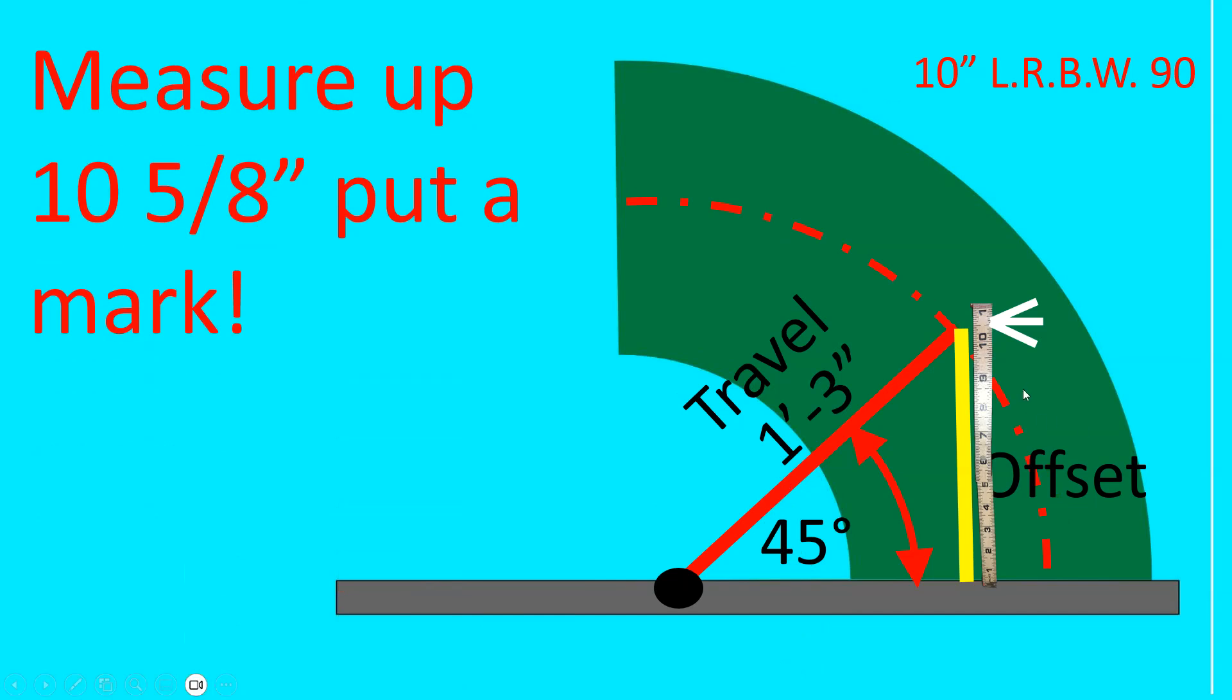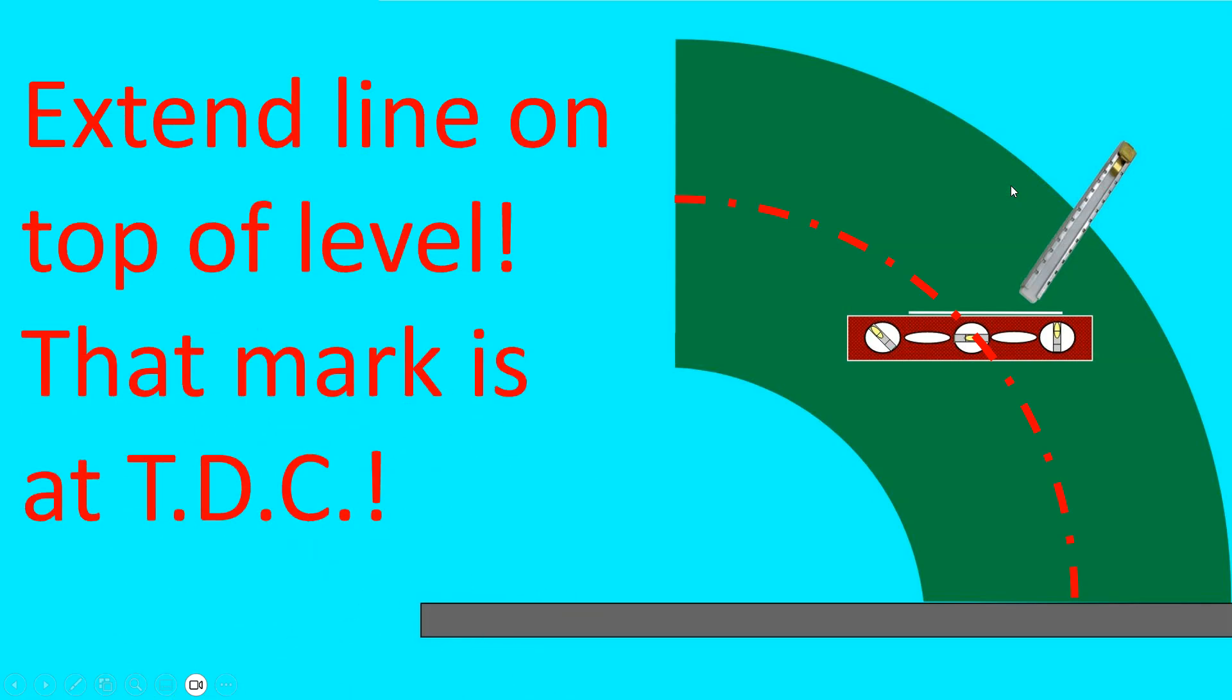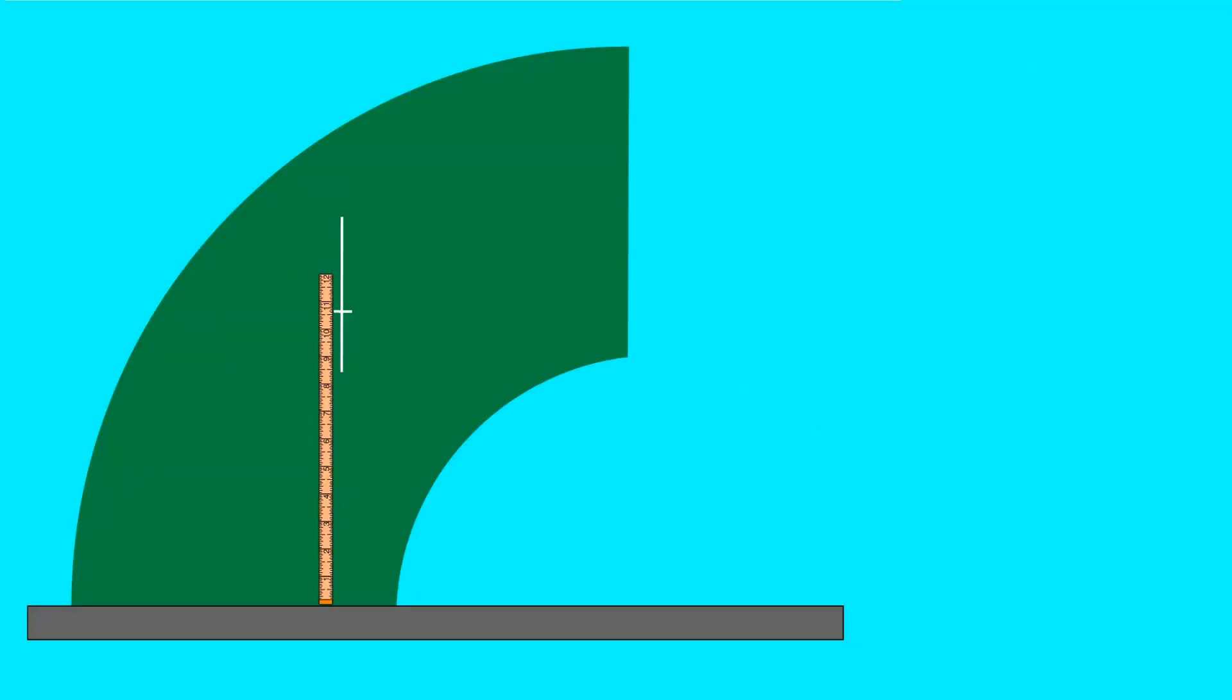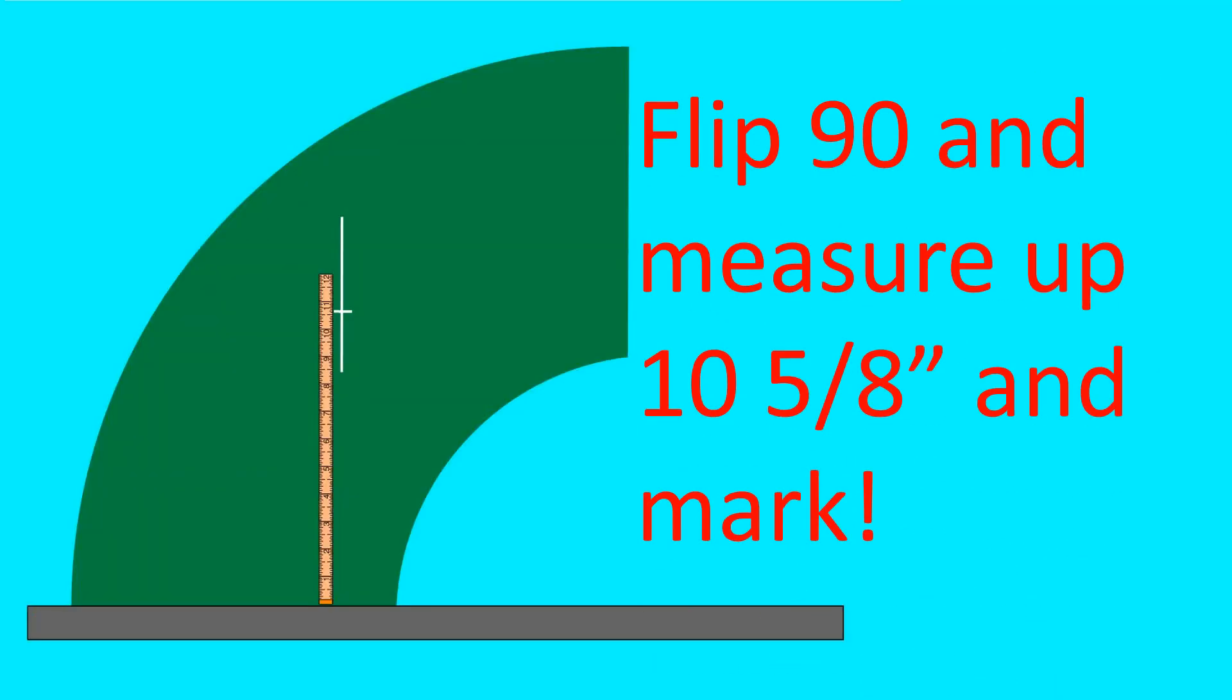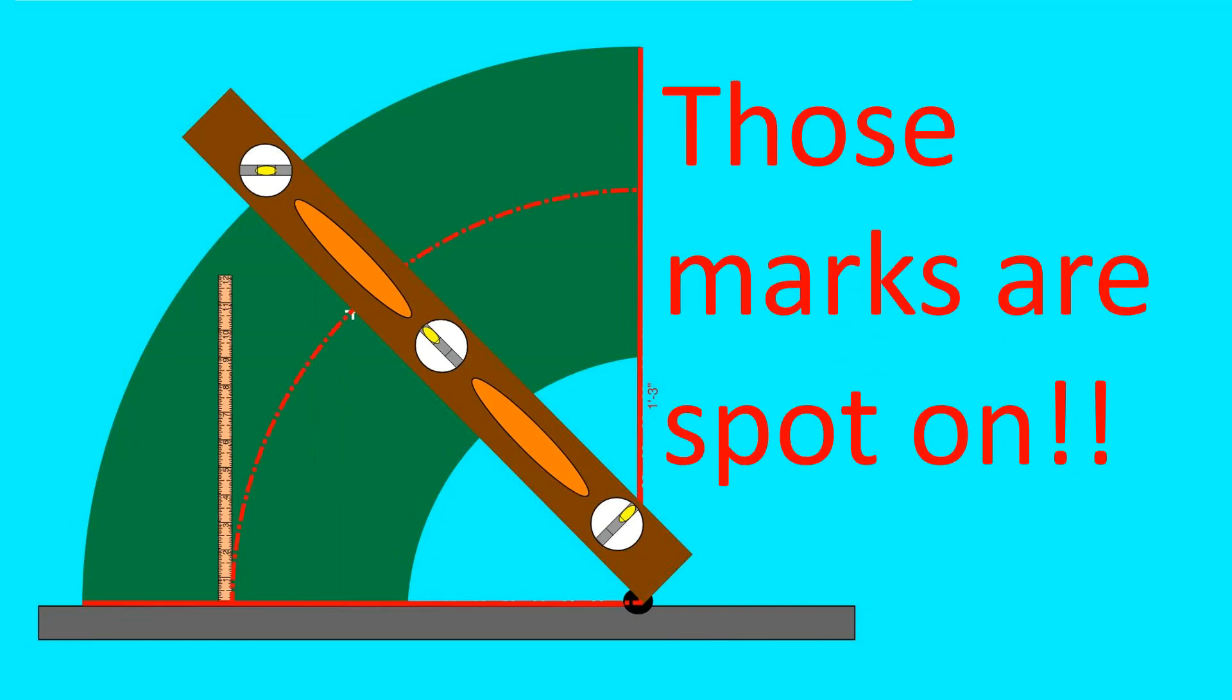So measure up to 10 and 5 eighths, put a mark. There you can see we got our stick rule out. We're going to mark 10 and 5 eighths. We put a mark. Let's extend that line on top of a level. And that mark is going to be at top dead center. Flip the 90 and measure up to 10 and 5 eighths and mark the other side. Repeat the same procedure on the opposite side. Those marks are spot on, right at top dead center and they're on a 45.